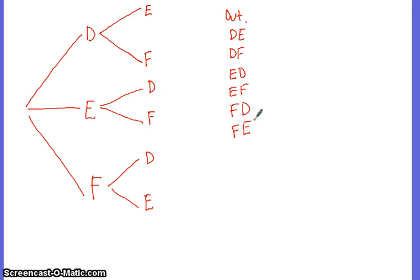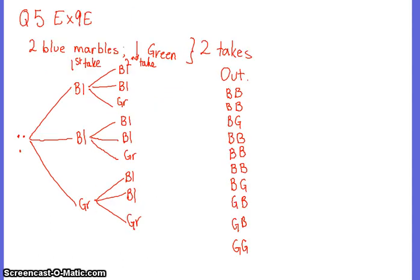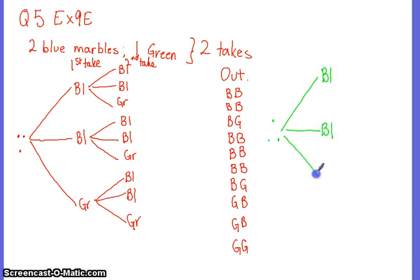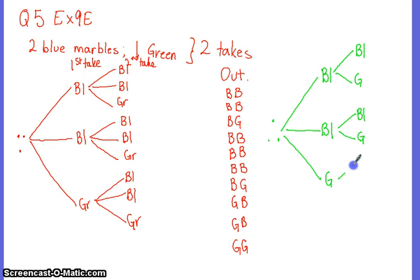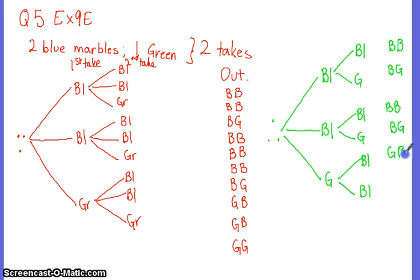You can see that when you don't replace something, the mix becomes different. Going back to the marbles — if you don't replace one, this is how it differs. You've got your three marbles, and the first chance is to take a blue, a blue, or a green. But if you pick the first blue and don't replace it, the only chances you've got next are a blue or a green — and similarly for the other branches.